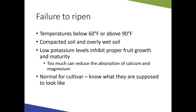Failure to ripen can have several causes. Temperatures below 60 degrees or above 90 degrees can prevent proper ripening — during hot summer periods, tomatoes sometimes just won't ripen. Compacted or overly wet soil reduces root function. Low potassium levels can inhibit fruit ripening, though too much potassium reduces calcium and magnesium uptake, so balance is key — another reason for soil testing. Also, know what your specific variety is supposed to look like when ripe, as some stay green or only turn yellow.